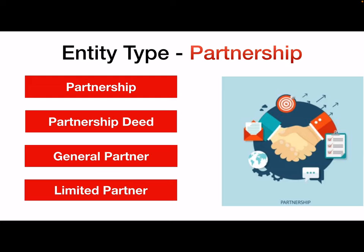A limited partner, on the other hand — sometimes also known as a silent partner — has limited liability for the company's liabilities and debts. Unlike a general partner, how much liability a limited partner acquires is based on how much capital they contribute.